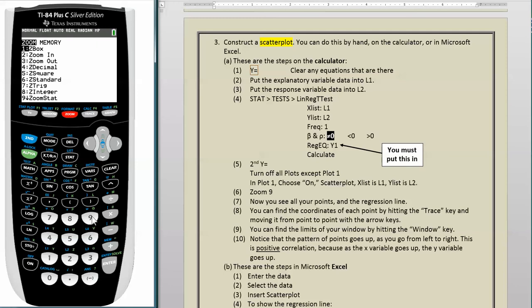And once that's all in there, you can hit ZOOM 9. And here are all the points in your scatter plot. And this line here, we'll come back and talk more about that line later, but that is the regression line. You can find the coordinates of each point by hitting the TRACE key and moving it from point to point with the arrow keys. So if we hit TRACE, you see this point here is lit up, and it tells us that the X coordinate is 314 and the Y coordinate is 13.9. That was the first point in our data table.